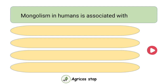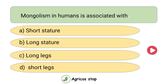Mongolism in humans is associated with? Options are short stature, long stature, long legs, and short legs. The answer is short stature. Mongolism in humans is associated with short stature.